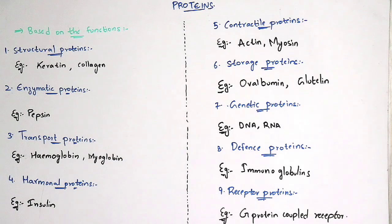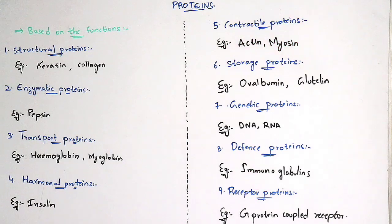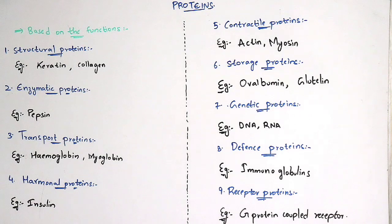The fifth type is contractile proteins. As the name indicates, contraction of muscles takes place by these contractile proteins. Relaxation and contraction of muscles all takes place by contractile proteins. The best examples are actin and myosin. Coming to the sixth type, storage proteins, which mainly store nutrients. For example, the ovum, which is released by females, gets stored by storage proteins.